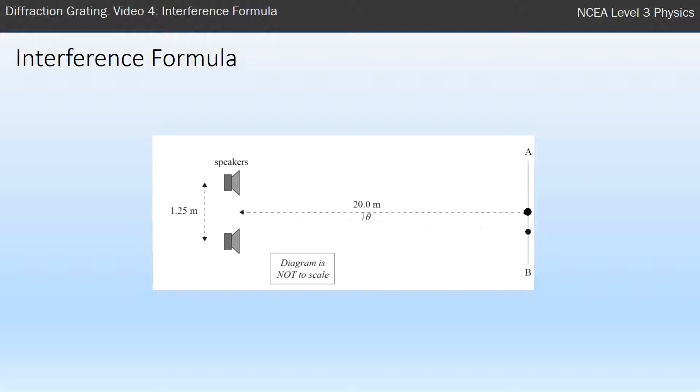So what we call is, we call the bit right in the middle, we call that the N equals zero. That's a loud spot and that's directly in the middle of the two speakers. Now either side of that, the next loud spots are N equals one and below is N equals one as well.